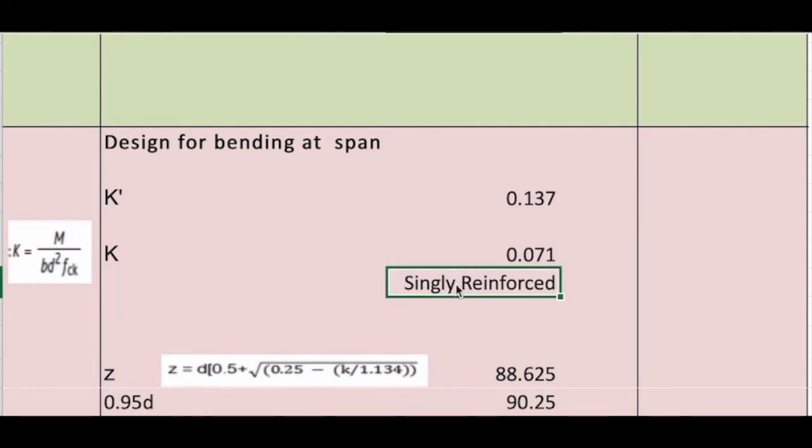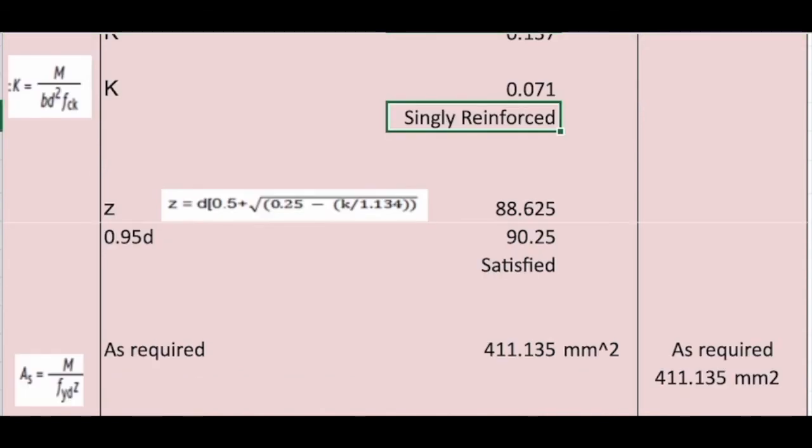Then we have to do the lever arm z. The equation z is equal to d times (0.5 plus square root of (0.25 minus K/1.134)). So the K value we found 0.071. We put all the data, it is going to be 88.625.